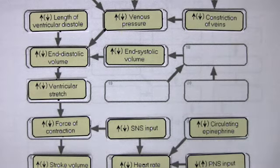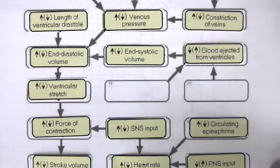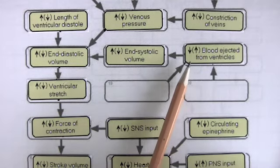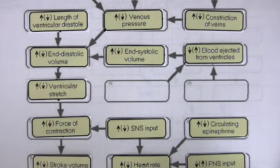What are those factors that cause an increase in end systolic volume? Well, first of all, end systolic volume is due to a decrease in blood ejected from the ventricles. Obviously, if less blood leaves the ventricles, more blood remains in the ventricles at the end of systole. So, we need to consider those factors that influence the blood ejected from the ventricles.